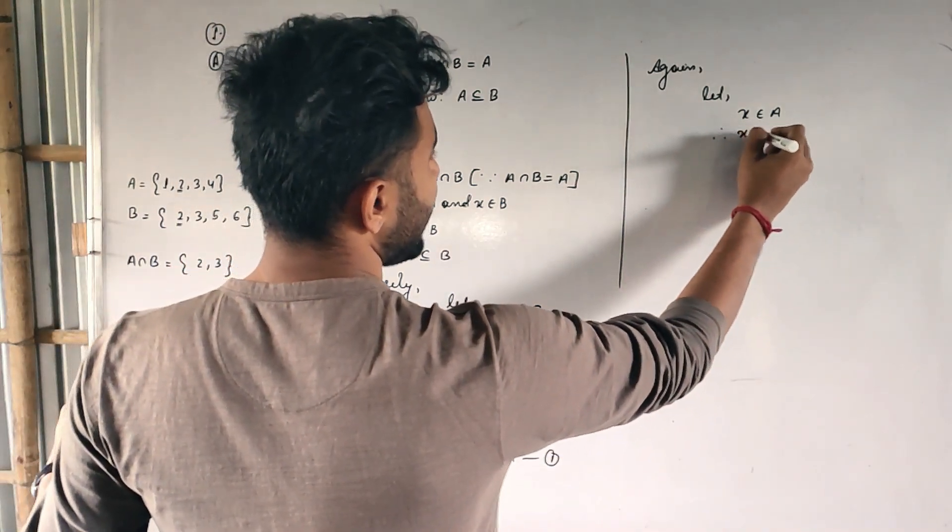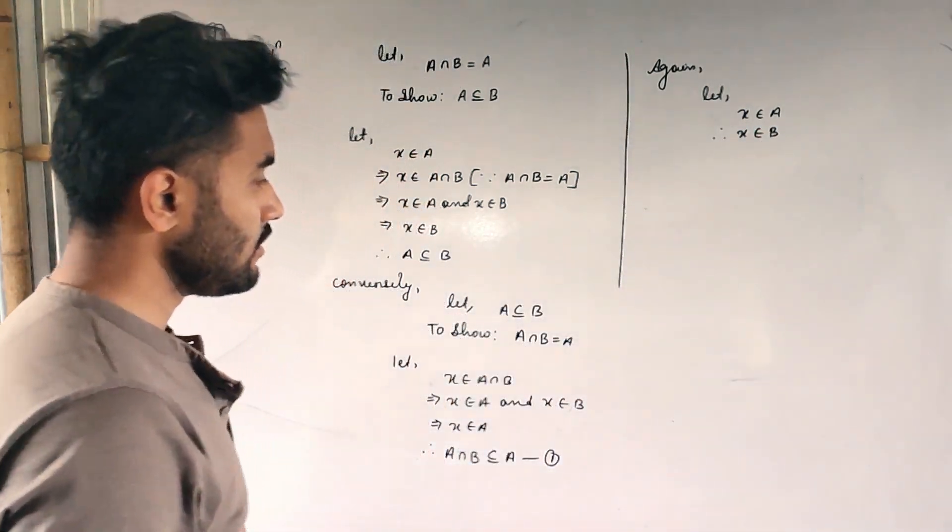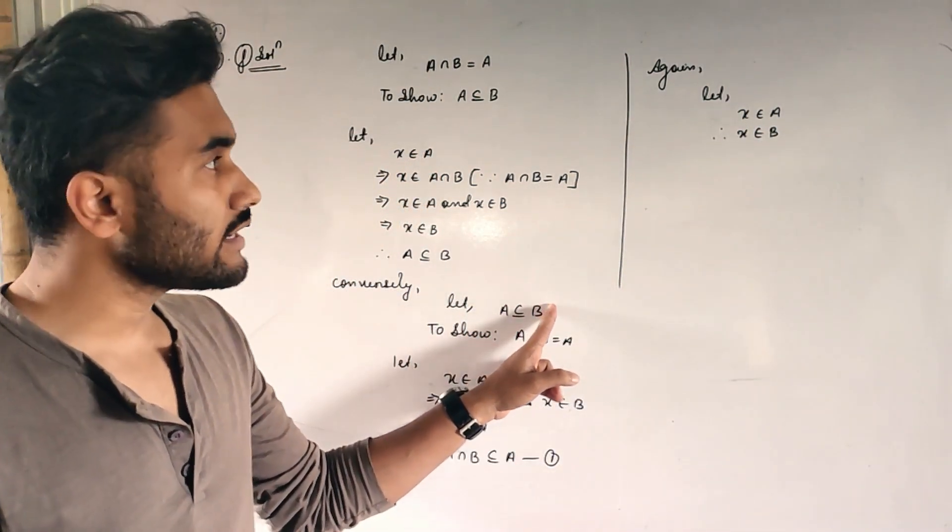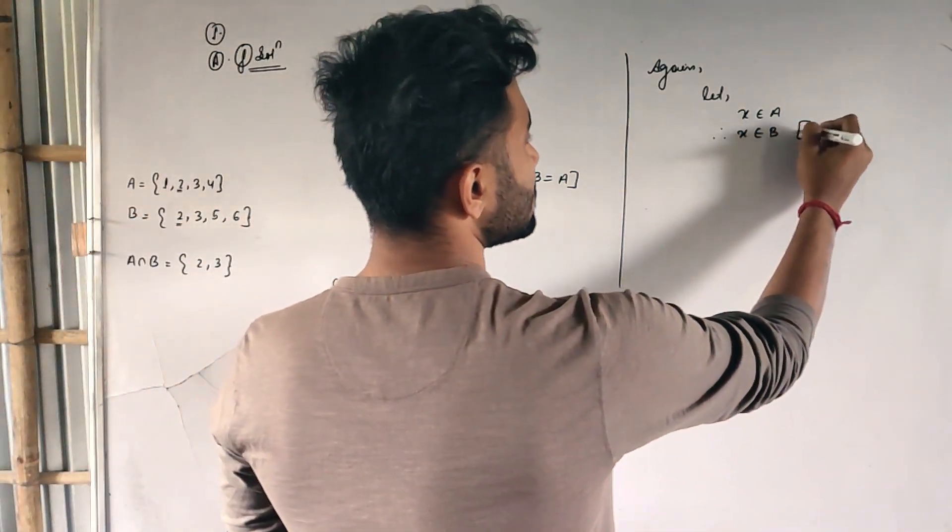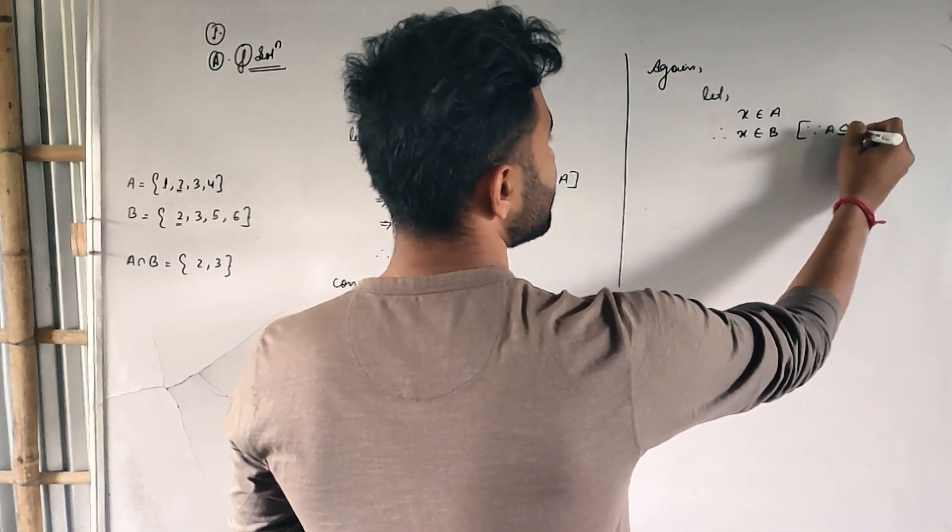Therefore obviously X belongs to B. Why? Because A is a subset of what? B.